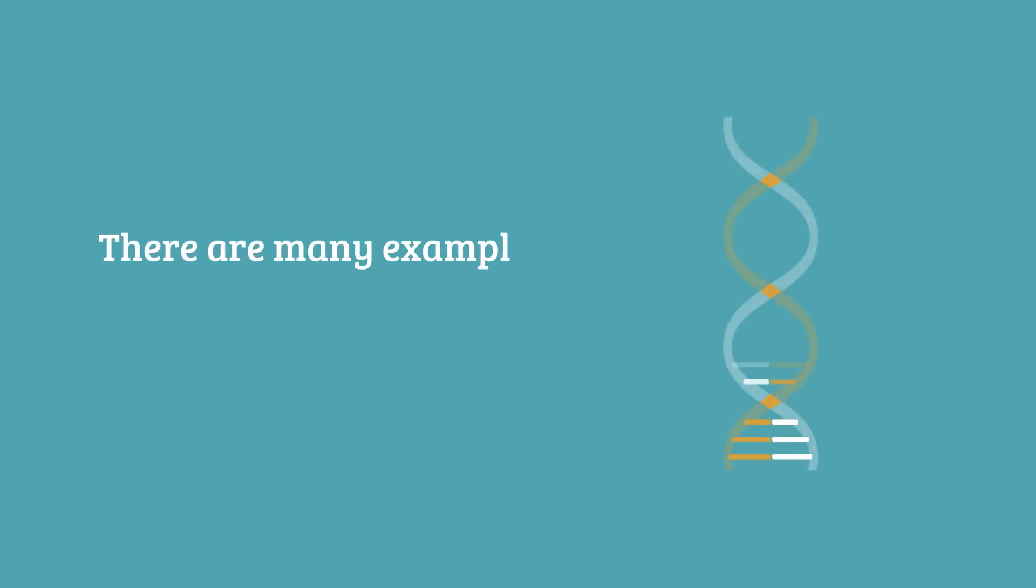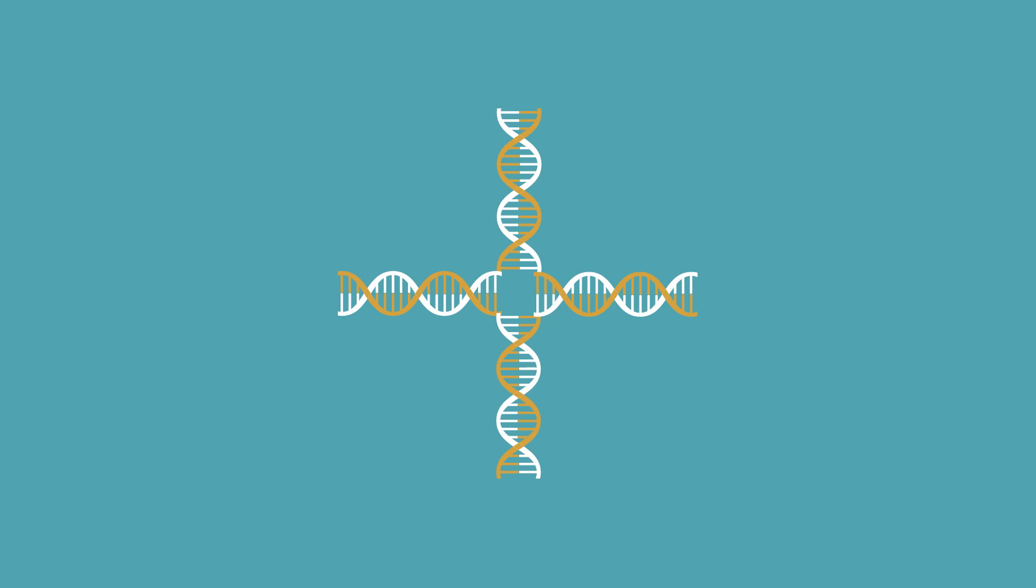There are many examples of self-assembly in nature, such as the formation of DNA. By altering the properties of the building blocks of DNA, scientists can direct them to assemble into predetermined structures.